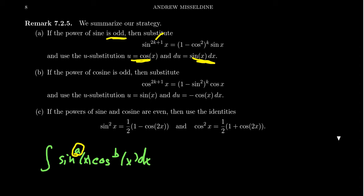And then you can transition all the other sines into cosines using the Pythagorean identity sine squared x is equal to 1 minus cosine squared x.